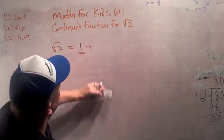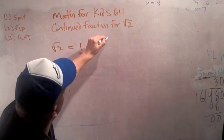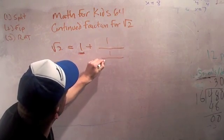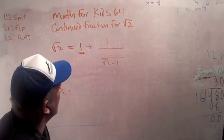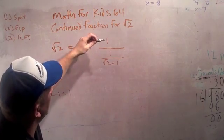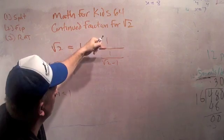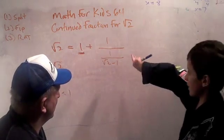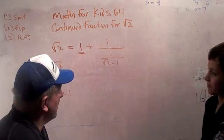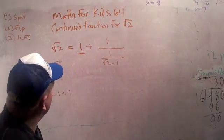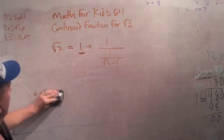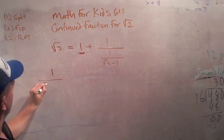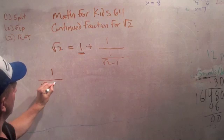So we're going to turn this upside down — flip it. This is going to equal 1 plus 1 over (1 over the square root of 2 minus 1). Why can I say something is 1 over 1 over that? Because that makes it flip up. So now we're going to try to understand the fraction 1 over the square root of 2 minus 1.